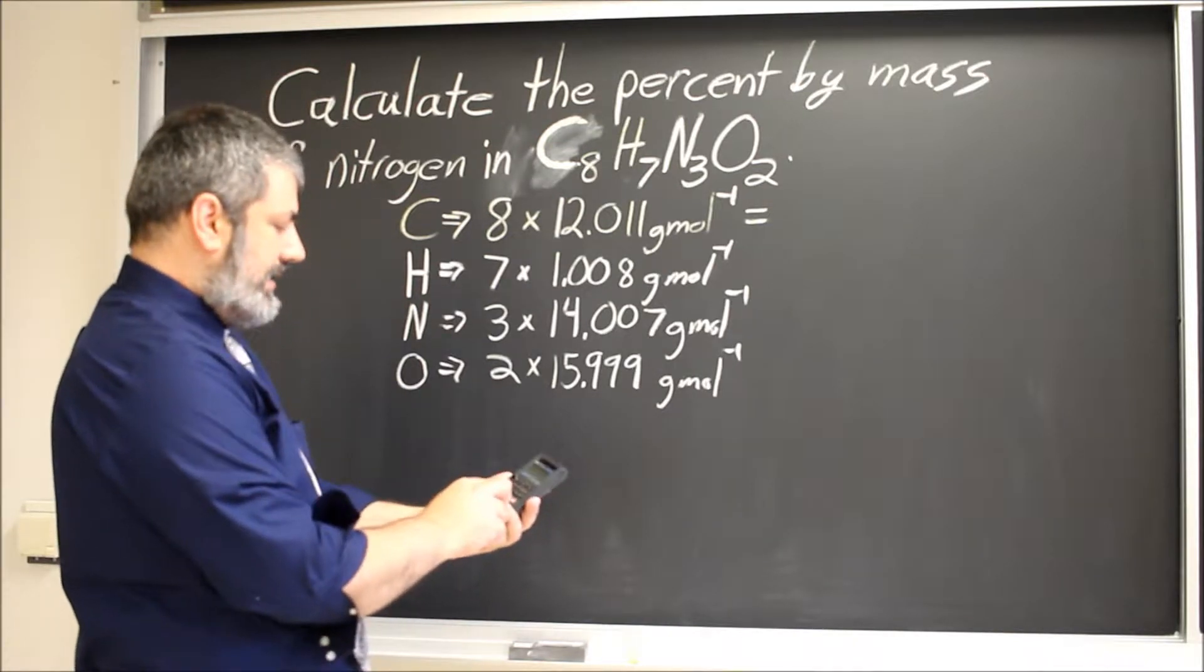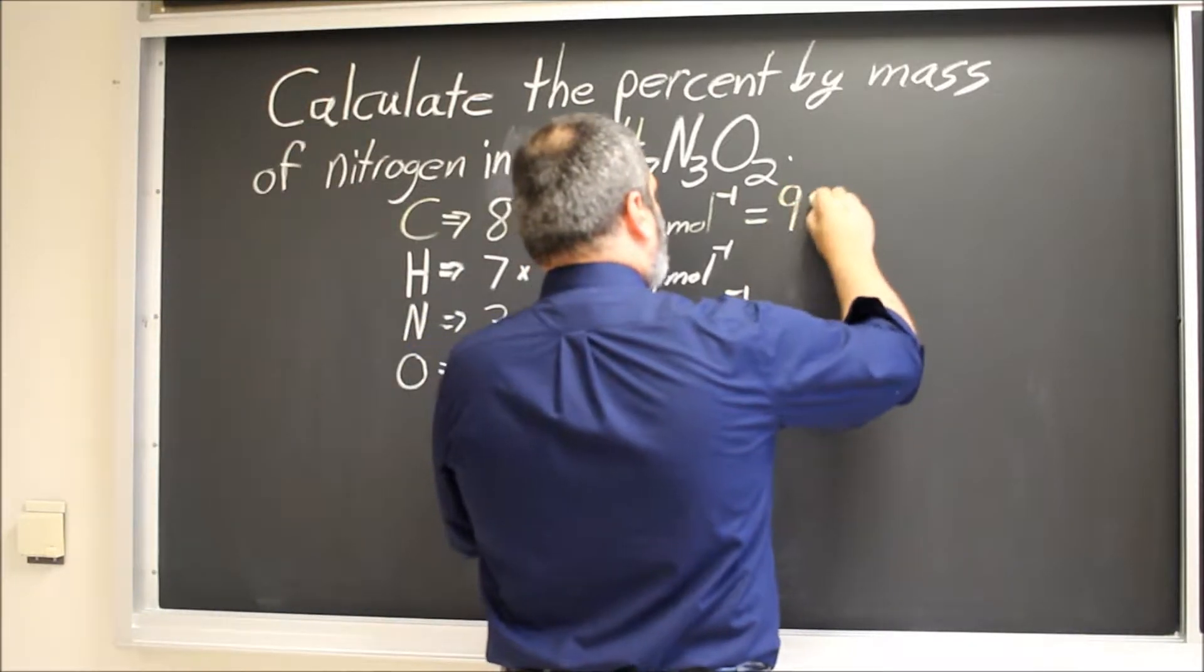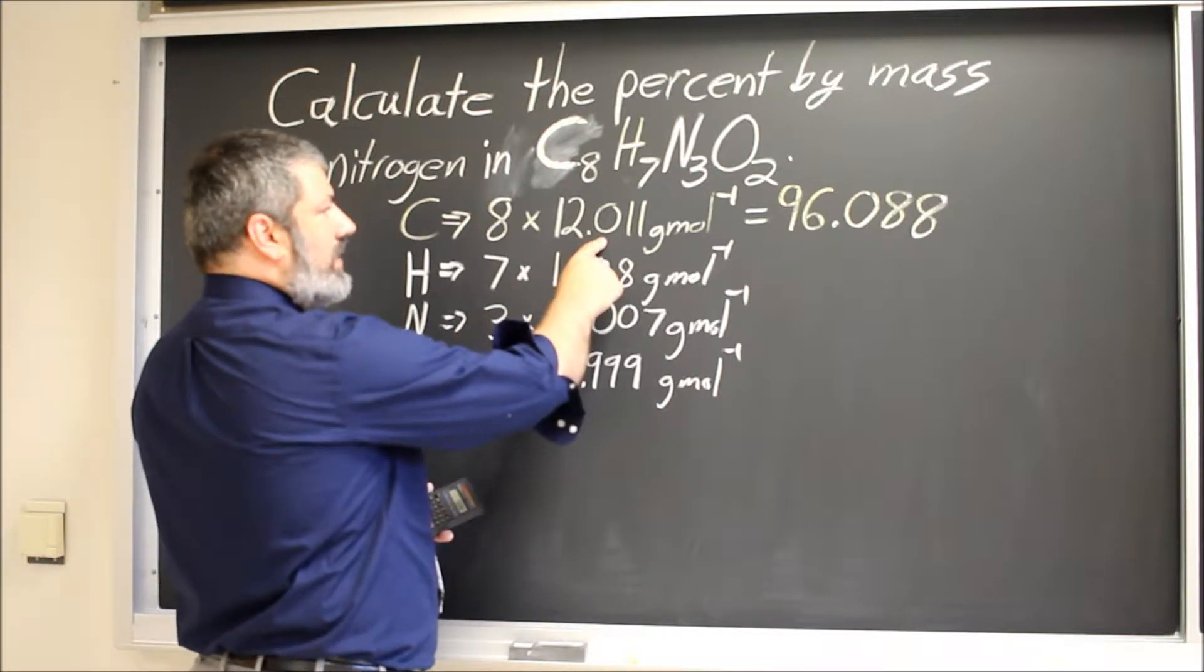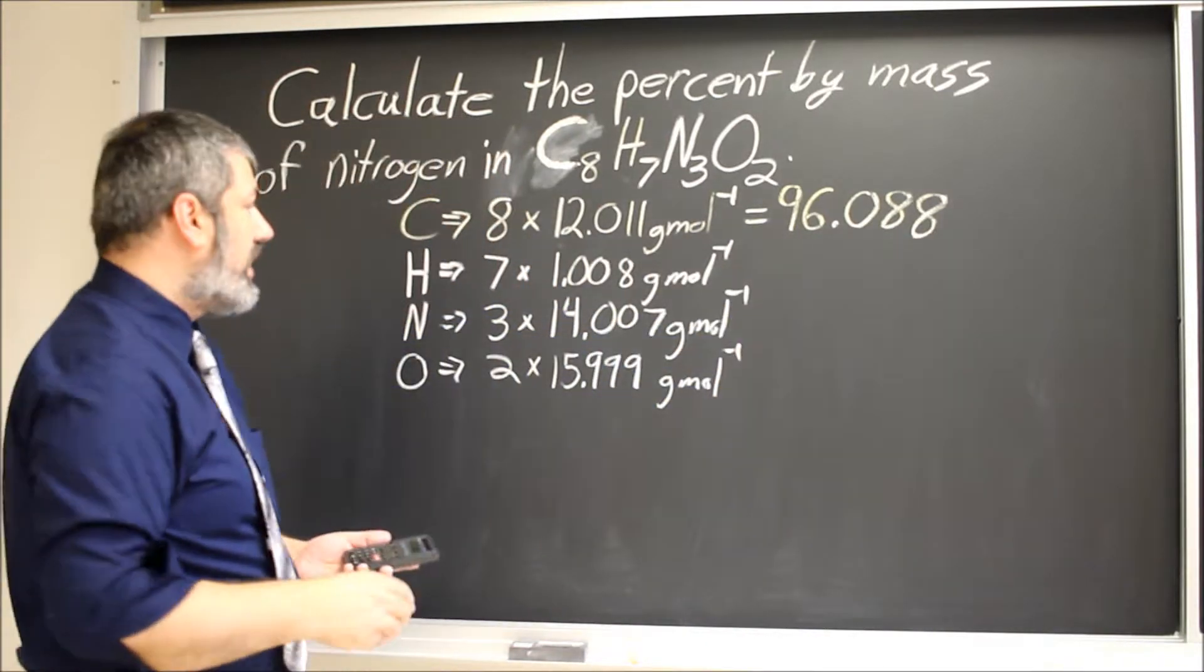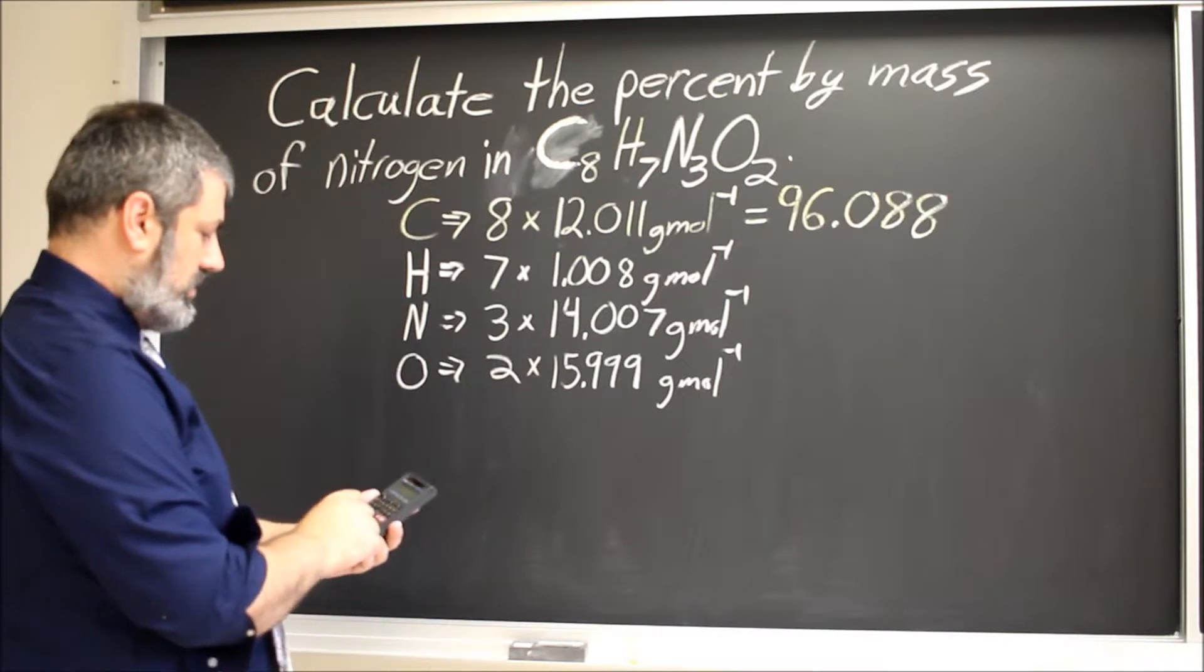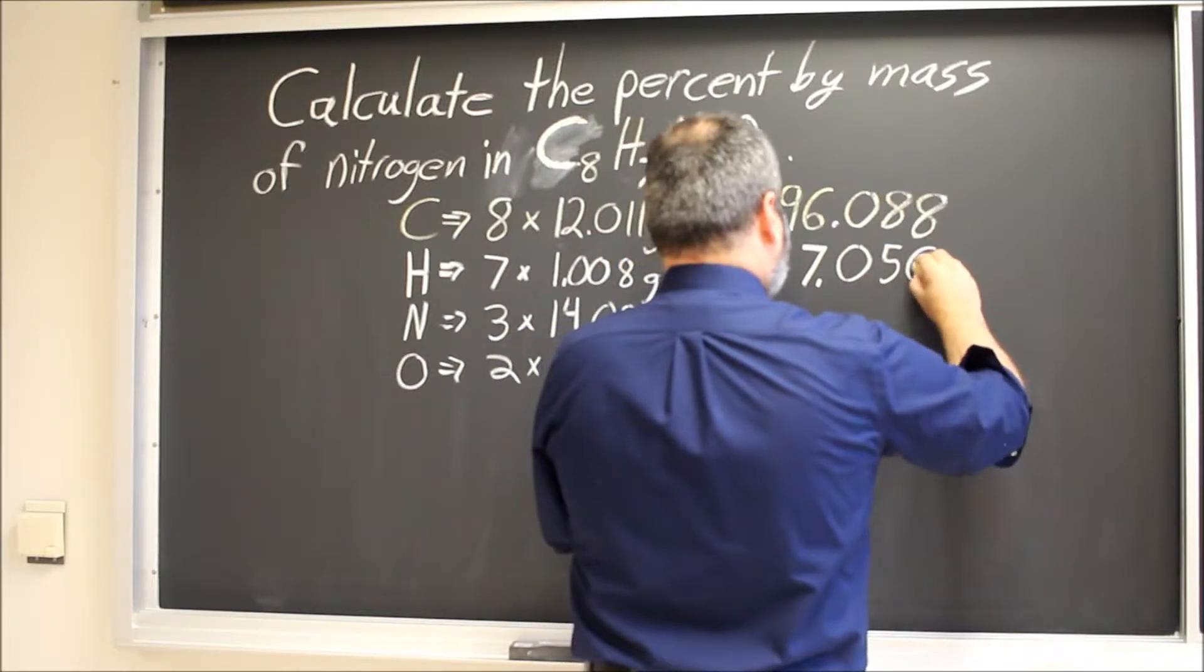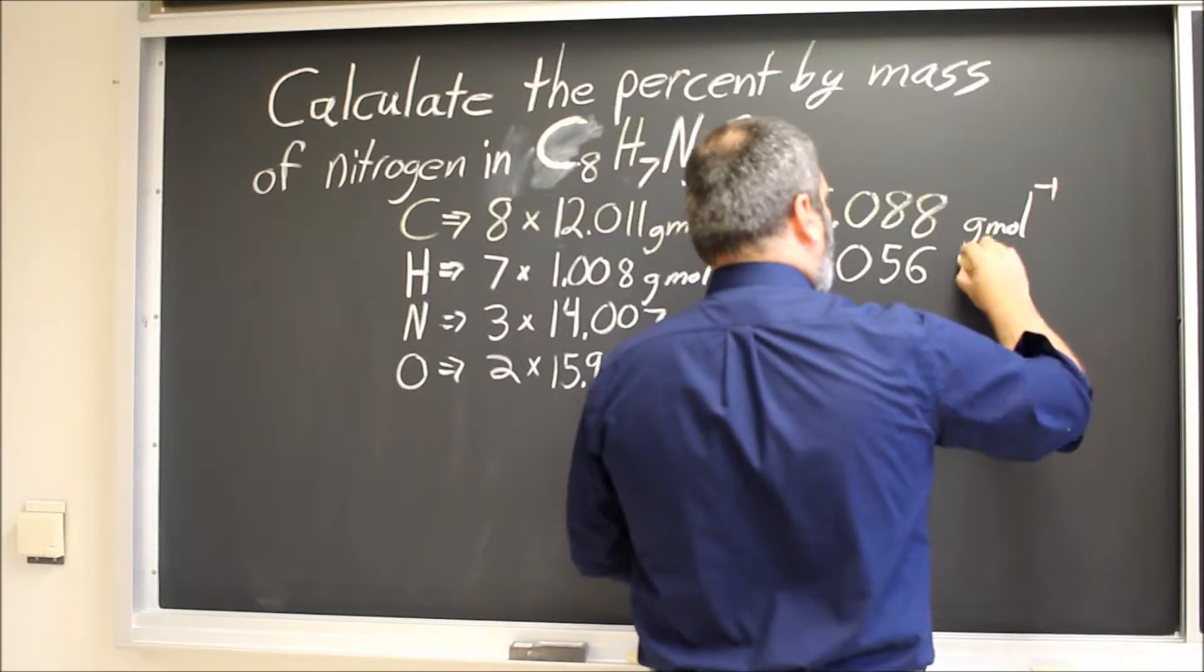So 8 times 12.011, this gives me 96.088. If I'm paying attention to my significant figures, I'm okay. I've got five significant figures here, five significant figures there, but we'll take care of that at the end. So we have 7.056, and all of these are in the unit of grams per mole still.